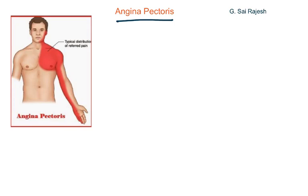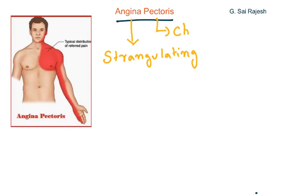Now let us see what is angina pectoris, which is commonly known as chest pain. This word is derived from a Greek word. Angina means strangulating or pressing, and pectoris means chest pain. So literally, angina pectoris means strangulating chest pain.